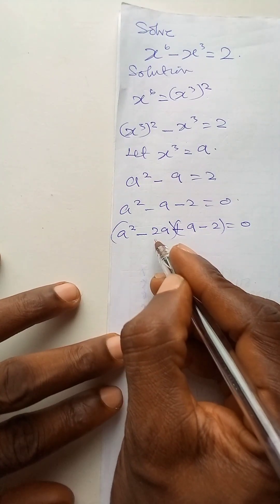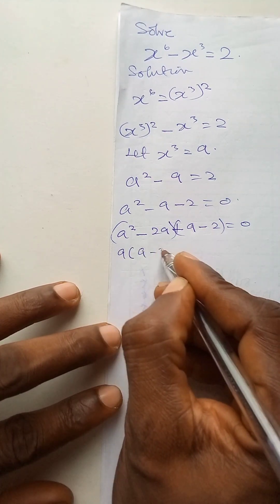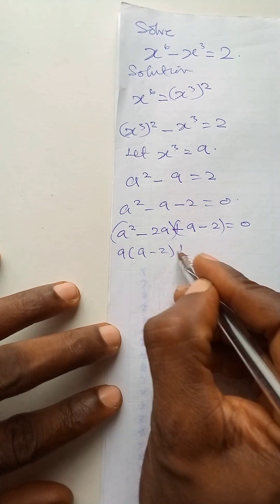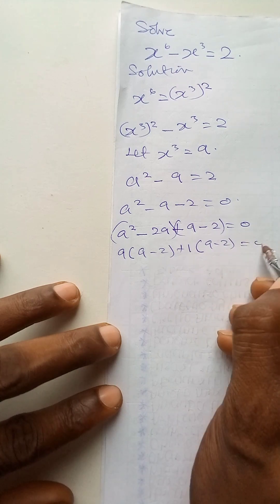In the first bracket, a is common. I will bring out that a, remaining a minus 2. In the second one, plus 1 is common, remaining a minus 2 is equal to 0.